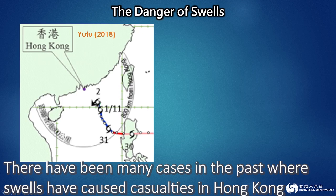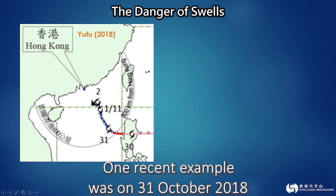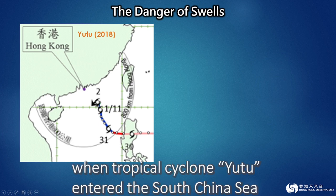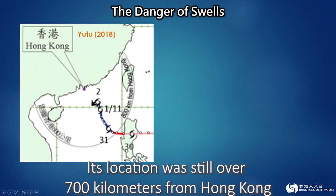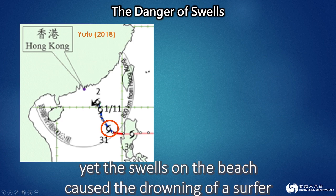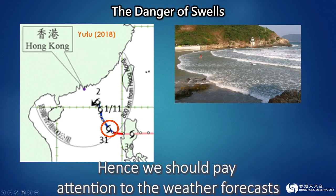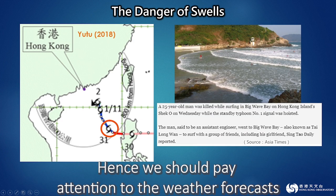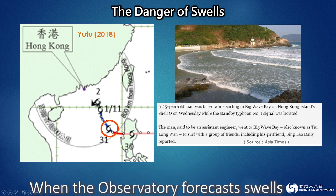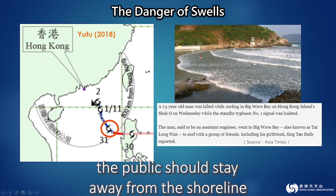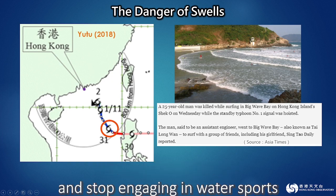There have been many cases in the past where swells have caused casualties in Hong Kong. One recent example was on 31 October 2018, when tropical cyclone Yutu entered the South China Sea. Its location was still over 700 km from Hong Kong, yet the swells on the beach caused the drowning of a surfer. Hence, we should pay attention to weather forecasts. When the observatory forecasts swells, the public should stay away from the shoreline and stop engaging in water sports.